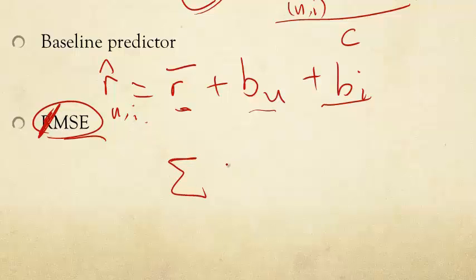So, we look at the summation of the difference squared, difference between R-U-I and R-hat U-I squared. We can also delete the step of dividing by the total number of ratings because that's just a constant that doesn't change our answers.